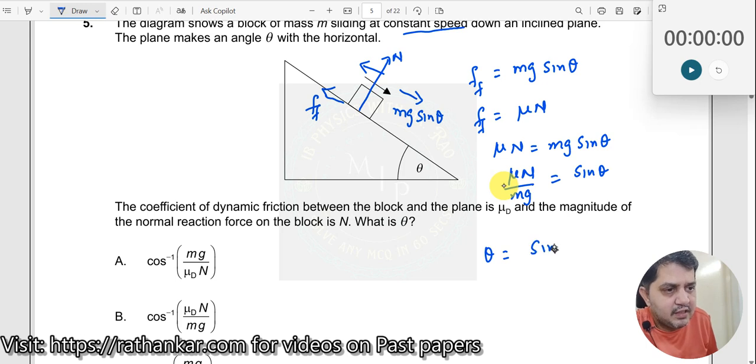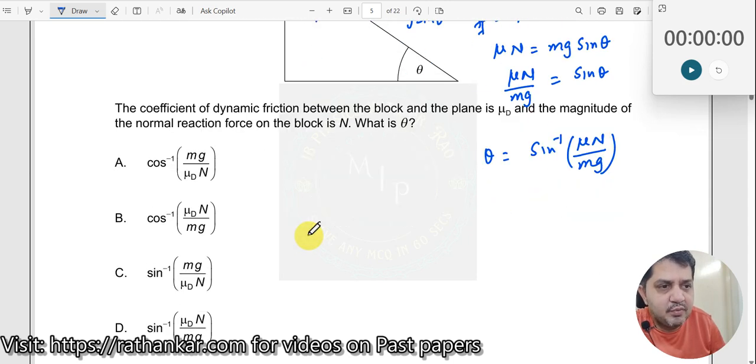So which is the right answer here? μ times sine inverse of μN divided by mg, μN by mg is answer D. Okay, well thank you very much.